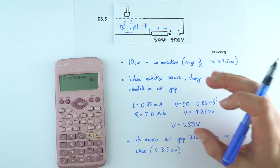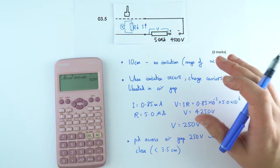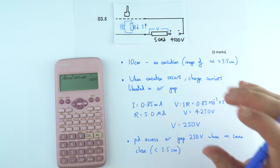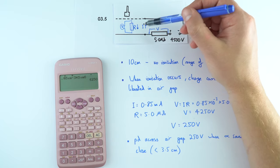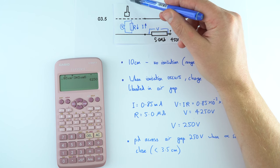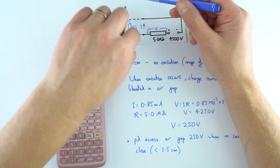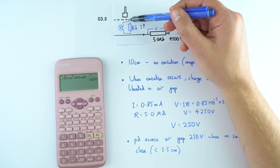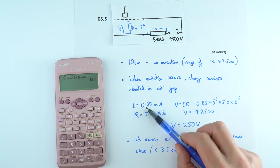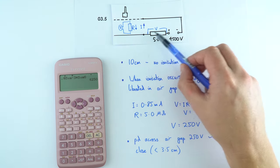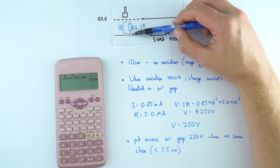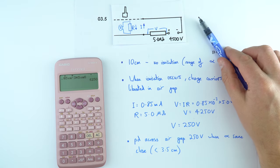This was a difficult question — only about 10% of students managed to get any marks. The key idea: when the alpha source is far away, PD across the air gap is zero because no current flows. When close enough, ionisation liberates charge carriers, current flows, and knowing the current lets you find the PD across the resistor and hence the air gap.